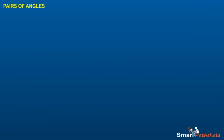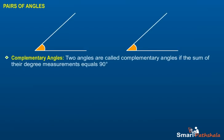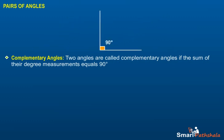Pairs of Angles. Complementary Angles. Two angles are called complementary angles if the sum of their degree measurements equals 90 degrees.